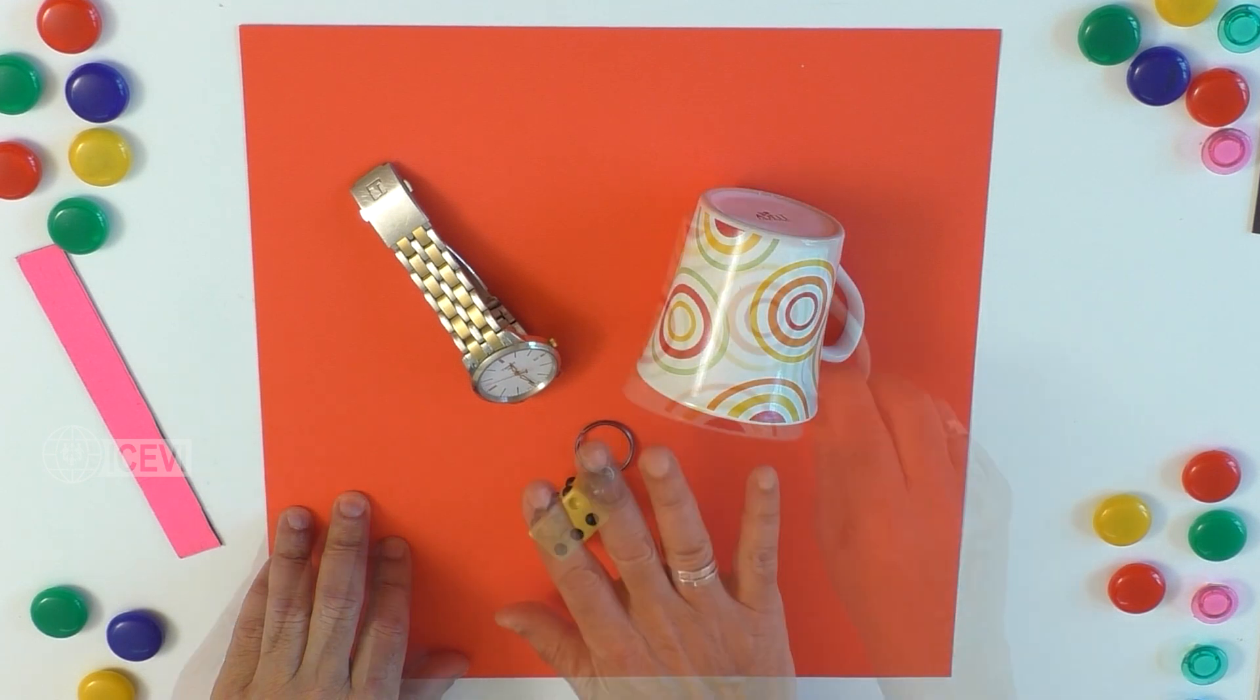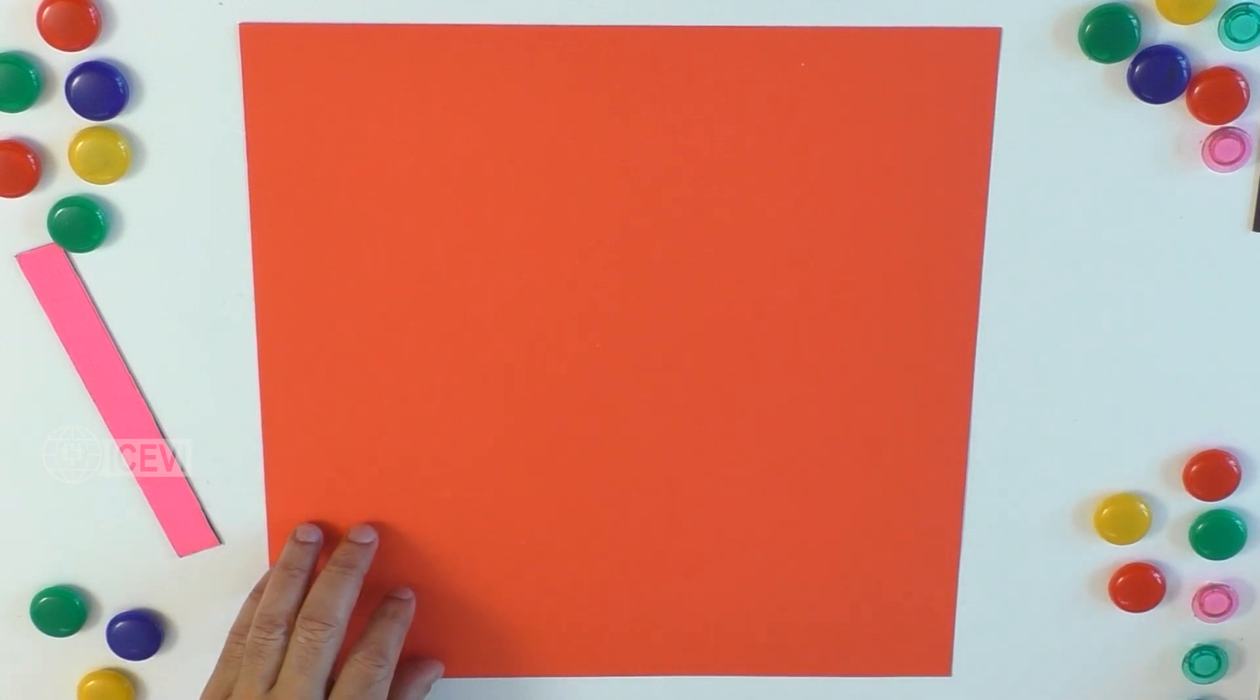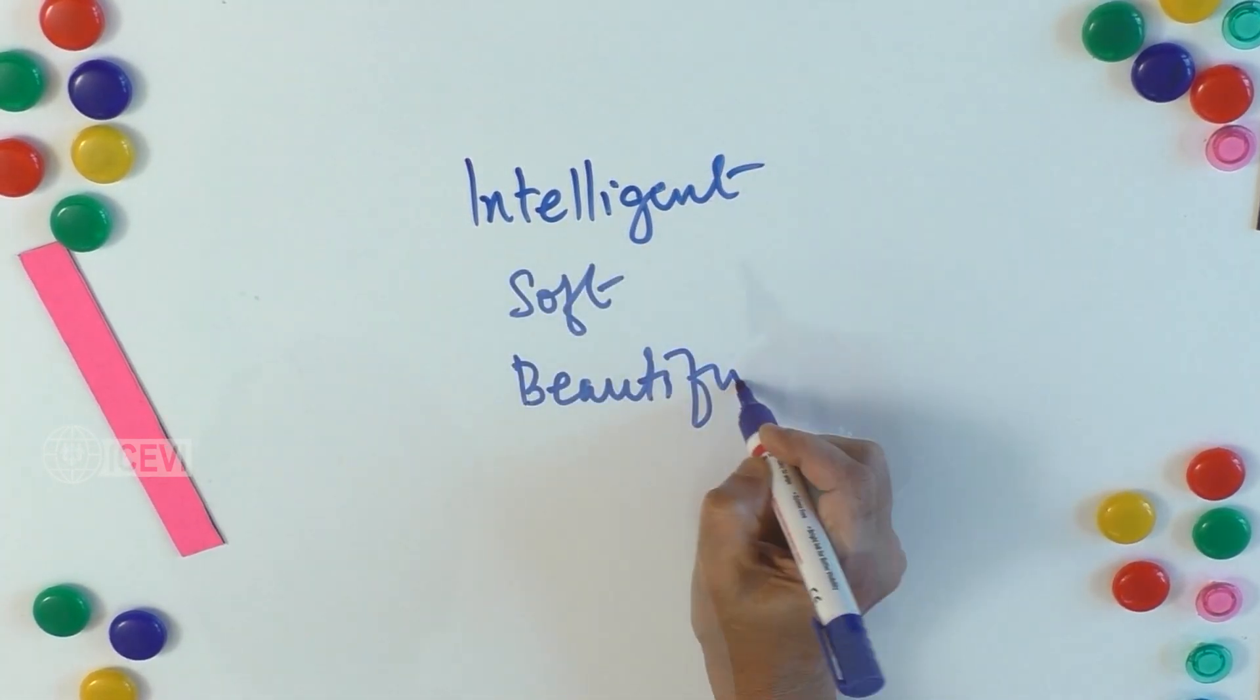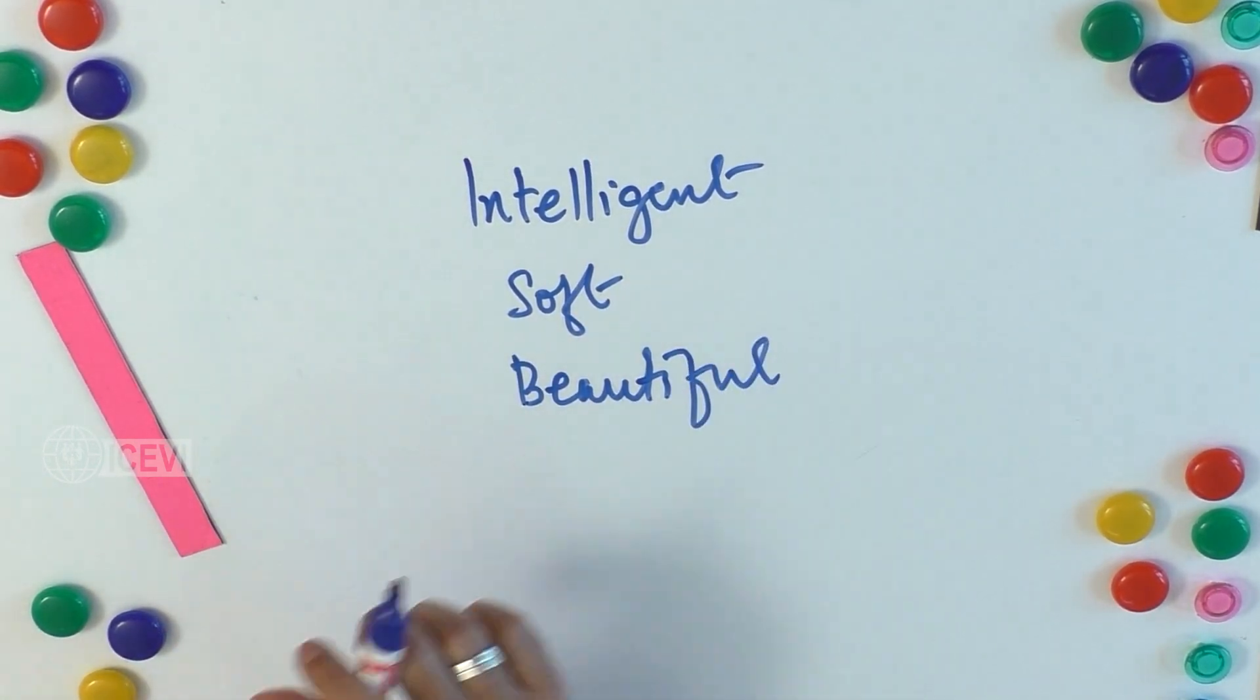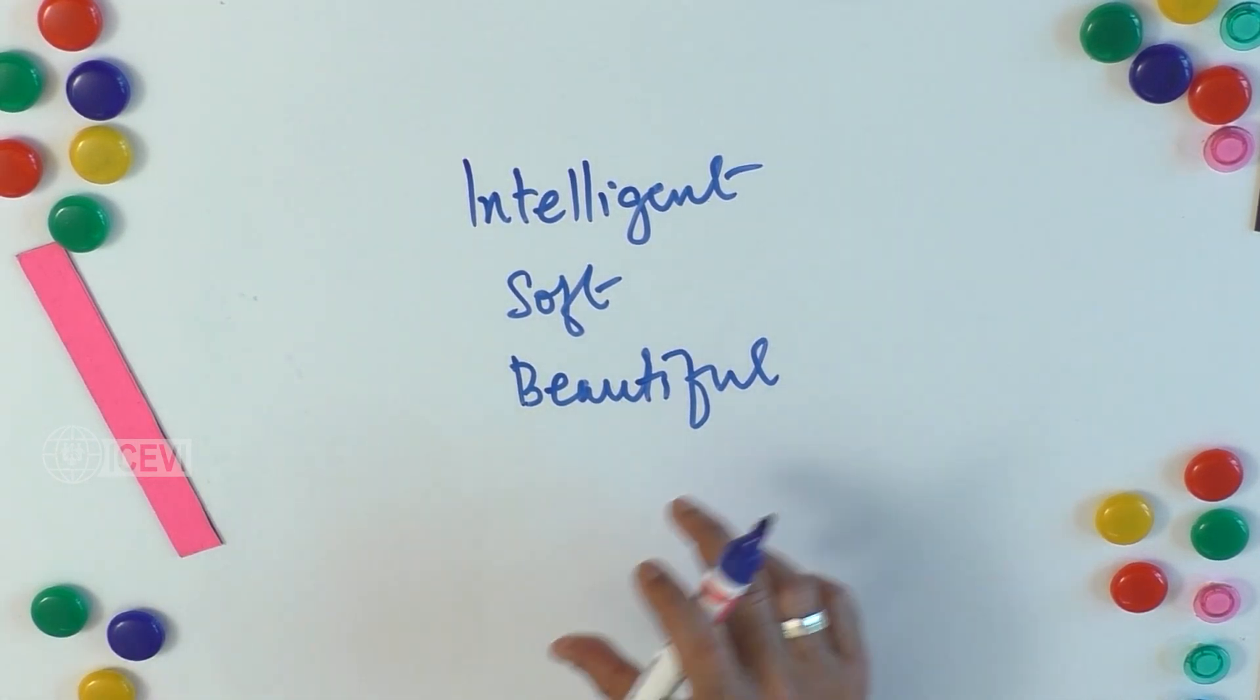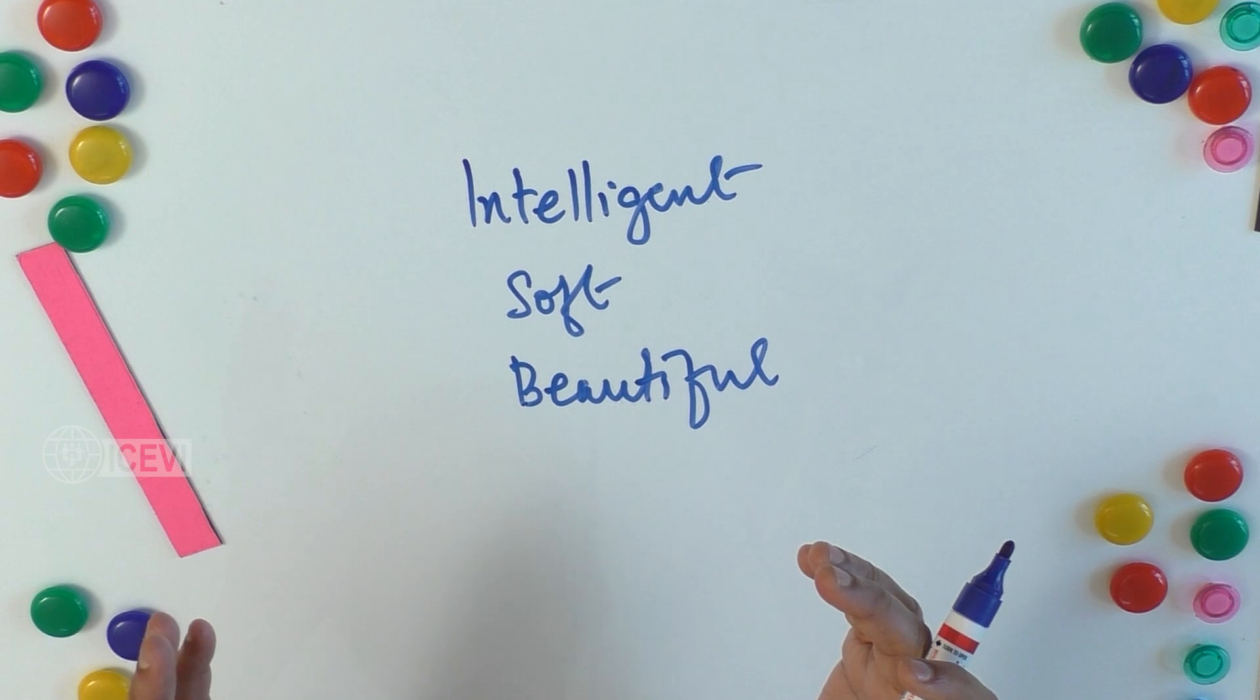At sometimes we use expressions like intelligent students, soft students. These are things which cannot be quantified. These are adjectives. Suppose we say the class of intelligent students, soft-spoken students, or beautiful children. These cannot be quantified unless we have a specific measure. Still, we consider that as a set. This type of set is what you call a not well-defined set.